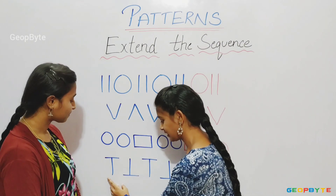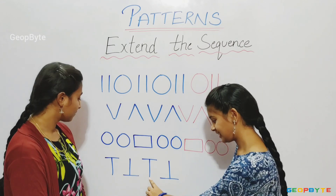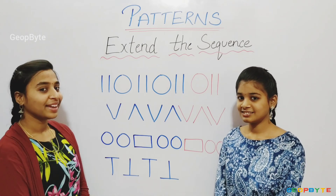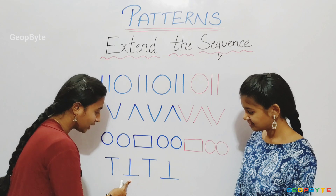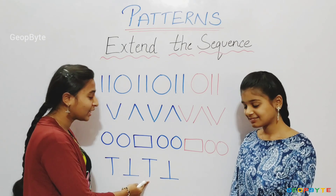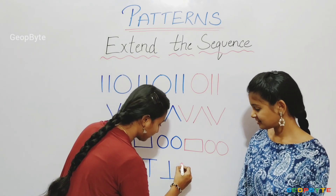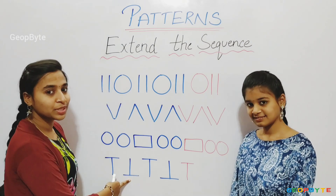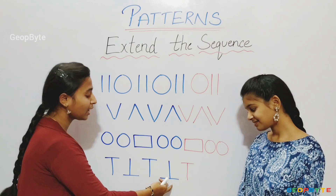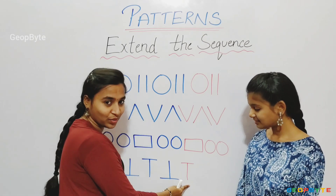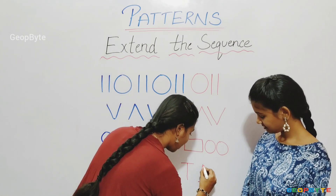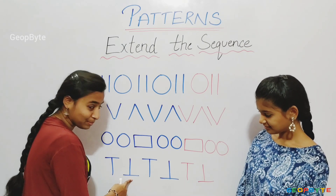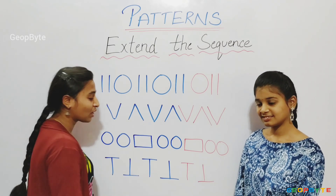Now, see here: T, upside down T, T, upside down T. Which T comes after upside down T? Let us see. After upside down T, we have a T. So, we get a T after upside down T. Again, after T, we have an upside down T. So, after T, we get an upside down T. Again, after upside down T, we get a T. Let us draw T.